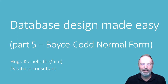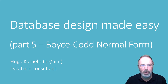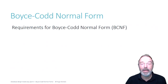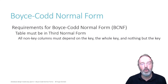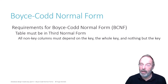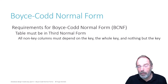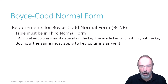Hello, welcome to the heavily delayed part 5 of Database Design Made Easy, where we are going to talk about Boyce-Codd Normal Form. Now for a table to be in Boyce-Codd Normal Form, it has already to be in 3rd Normal Form. That means, if you recall from the last video, that all the non-key columns must depend on the key, the whole key, and nothing but the key. To be in Boyce-Codd Normal Form, that same condition must be met for the key columns as well.